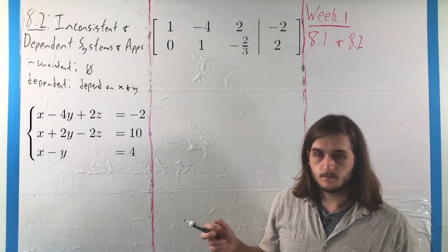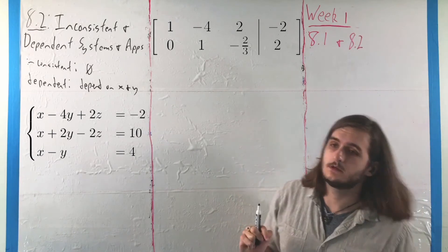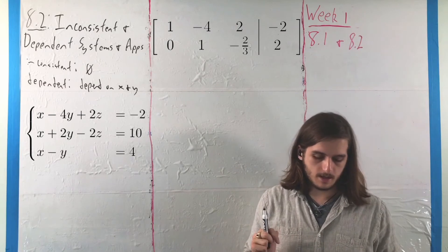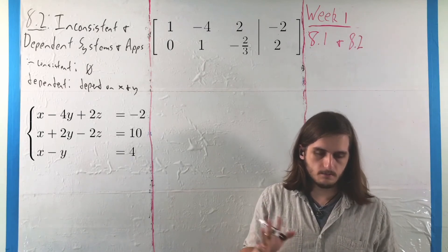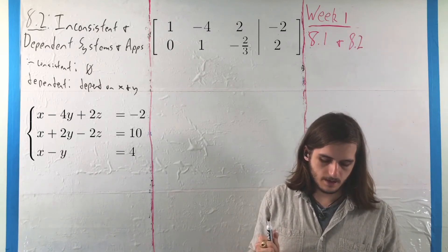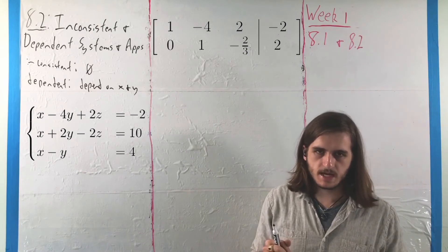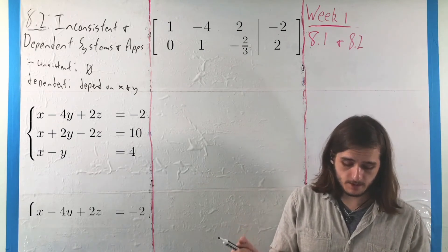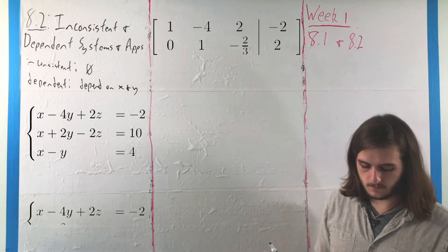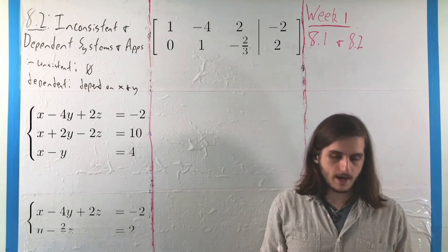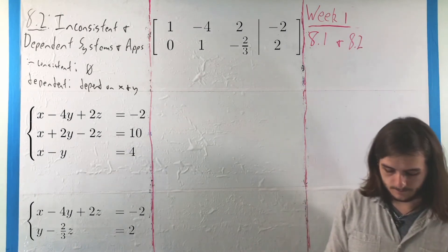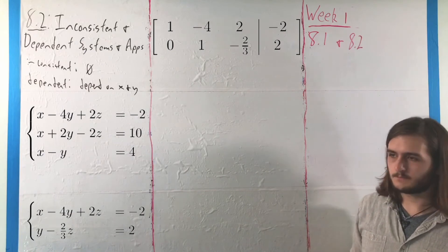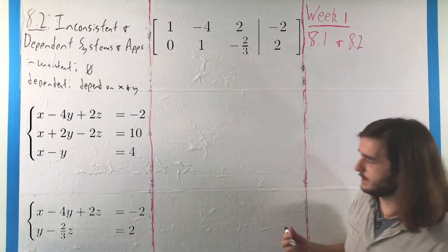And from there, we can turn that into a new system of equations, which would say that our original system is now equivalent to x minus 4y plus 2z equals negative 2, along with y minus 2 thirds z is equal to 2.